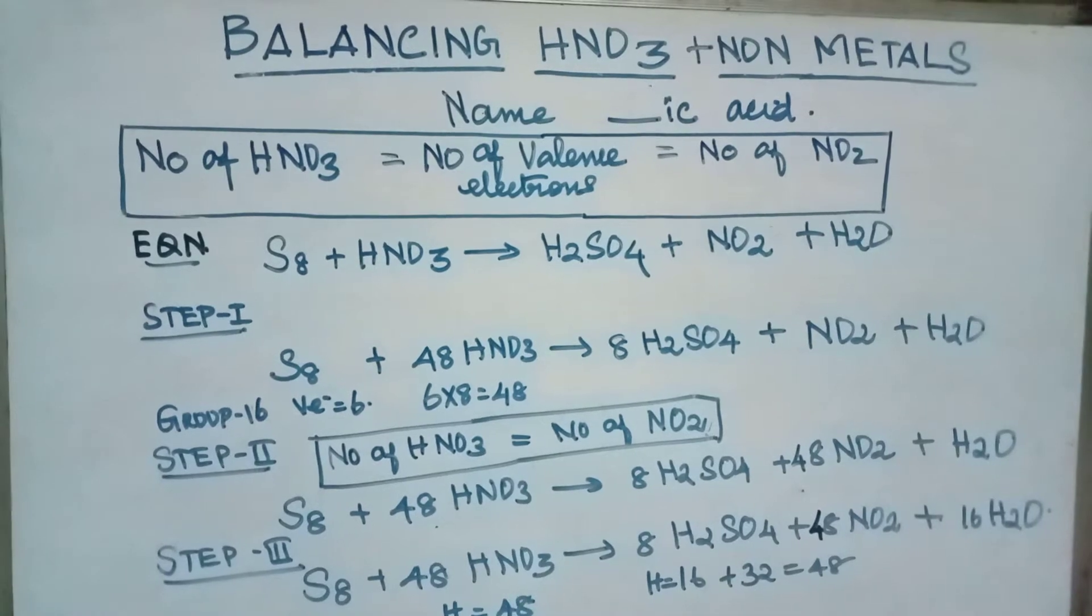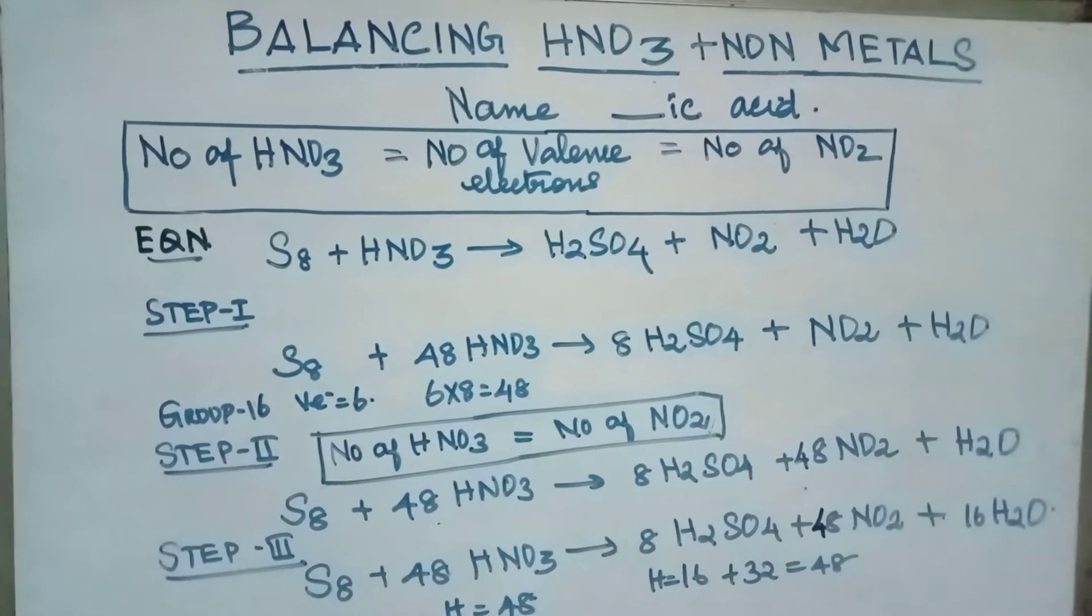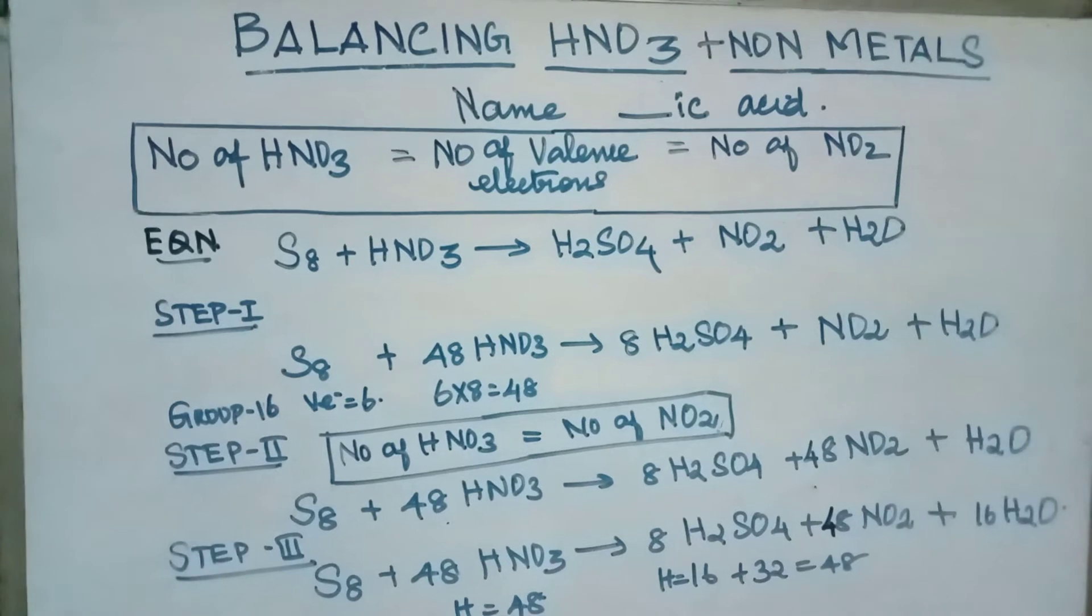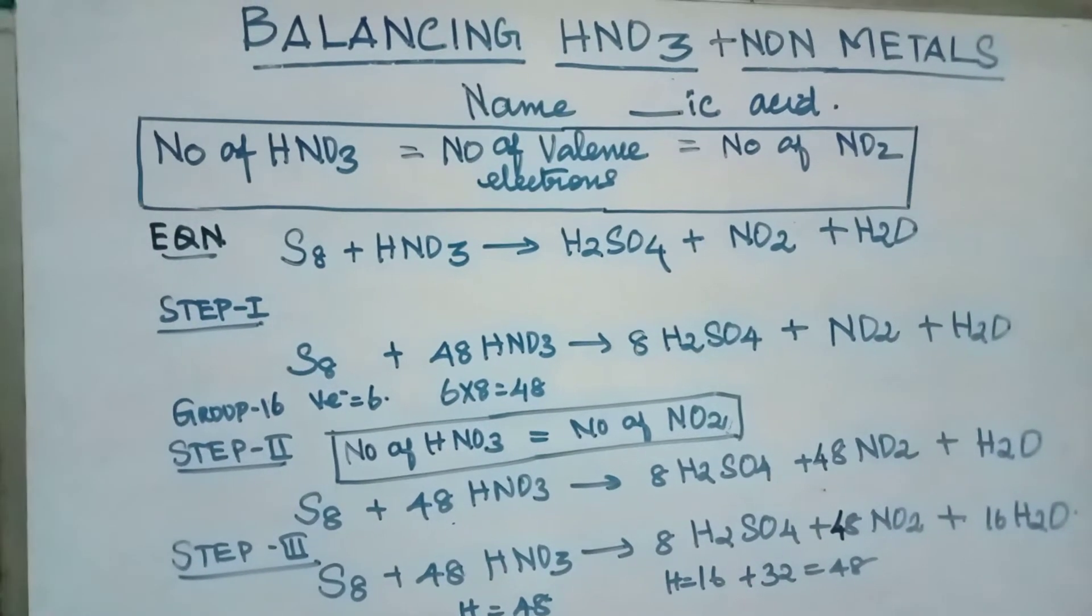The equation is S8 plus HNO3 gives H2SO4, NO2 plus H2O. Okay. Step 1.